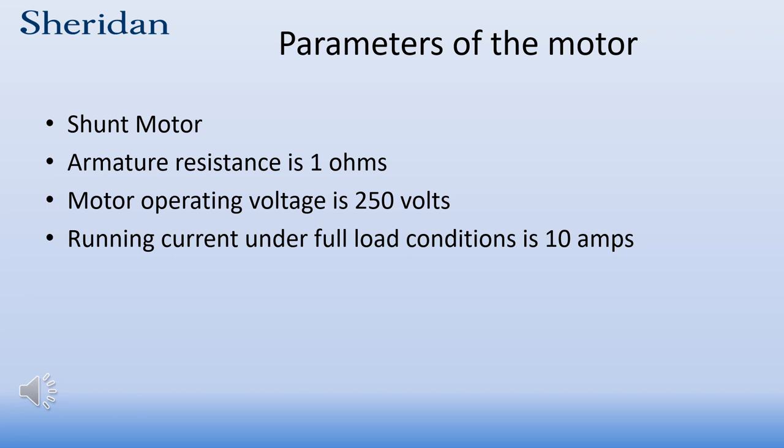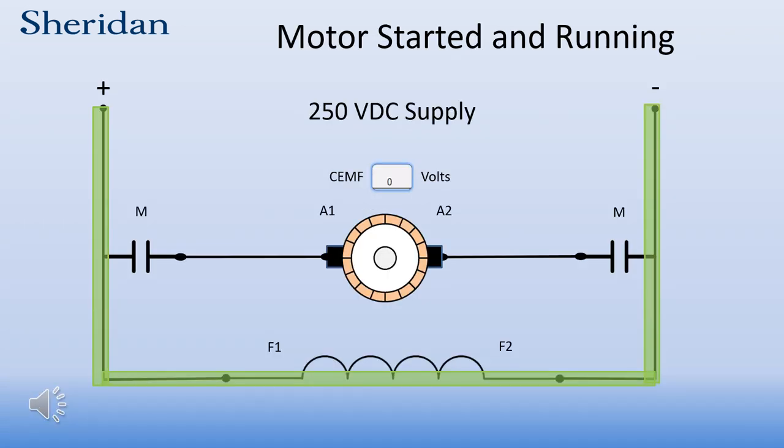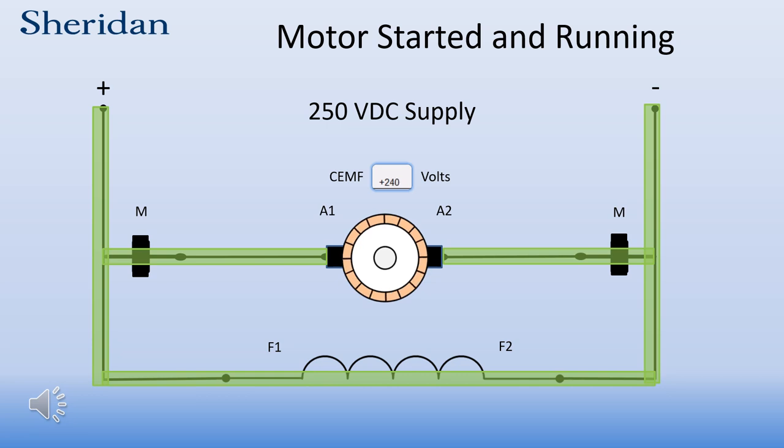Let's consider an example of a shunt motor. The rated voltage of the motor is 250 volts DC. The armature resistance is 1 ohm, and under full load conditions, the motor will demand 10 amps. When the starter contacts M close, current flows through the armature and the motor starts turning.